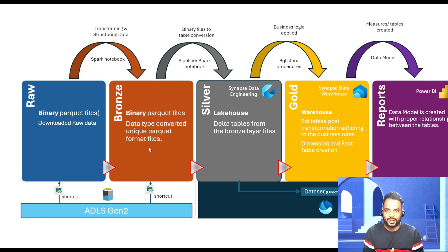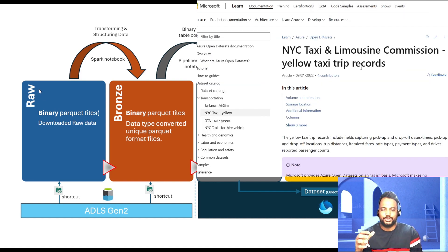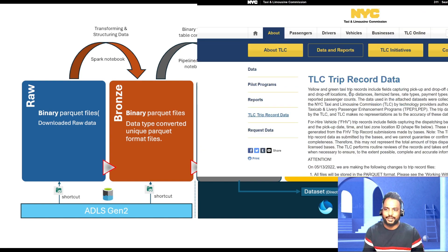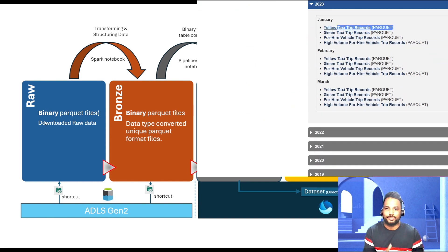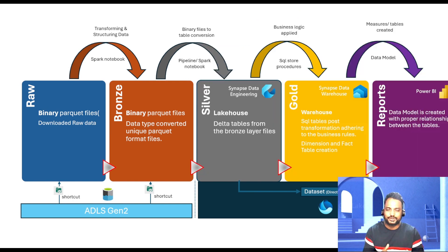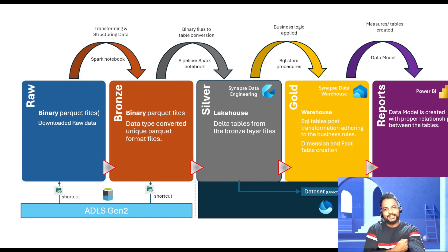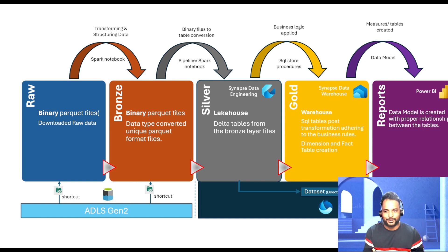This is the data flow diagram. We are going to follow the Medallion architecture — we will have a raw zone where we download the New York Yellow Taxi Trip dataset, which is an open dataset. That dataset has some problems: the data types are not the same across different files. So we need to do some data type conversion using a Spark notebook, and then keep the data in the bronze layer in Delta Parquet format, ensuring all files have the same format.